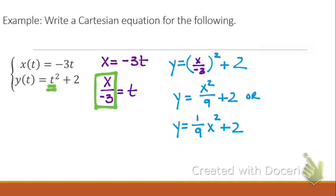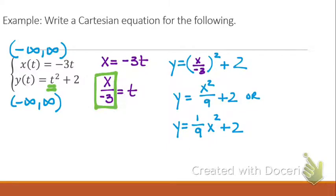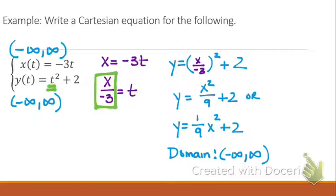I didn't have any restrictions, so this original one had a domain of all real numbers — x did, and my y has a domain of all real numbers. And when I'm looking at my Cartesian equation, I still don't have any red lights, so my domain is still going to remain all real numbers. Step number one is solve for t. Step number two is substitute. Step number three is solve for y and write the domain. So this would be my final answer.